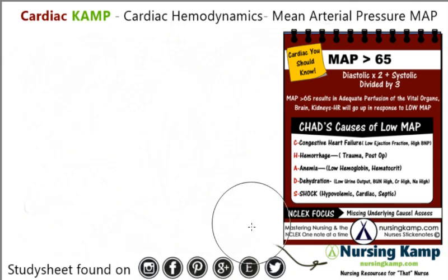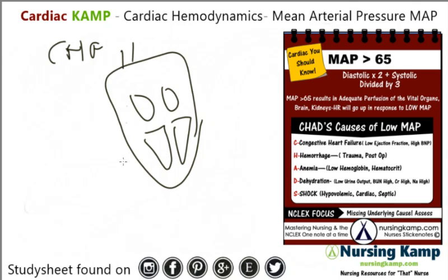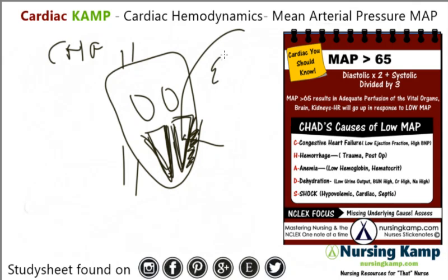CHAD's causes of a low MAP. C stands for CHF. In CHF, there's damage to the ventricle — the heart — and what happens is because it can't pump quite right, you can't get out your ejection fraction. The ejection fraction is the amount of volume of blood getting out of the heart to the rest of the body, to the fingers and toes.